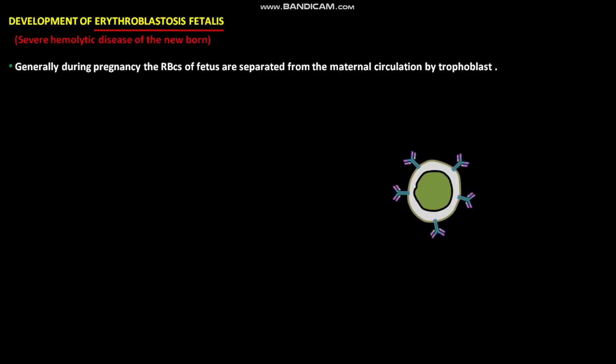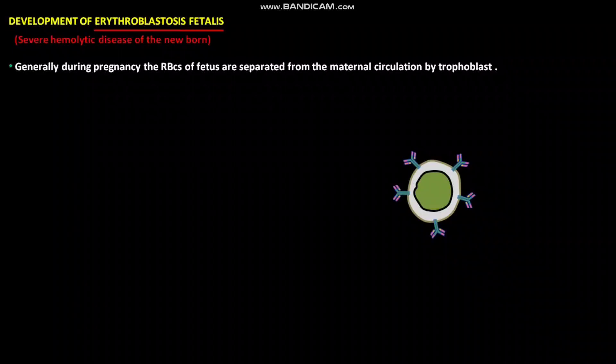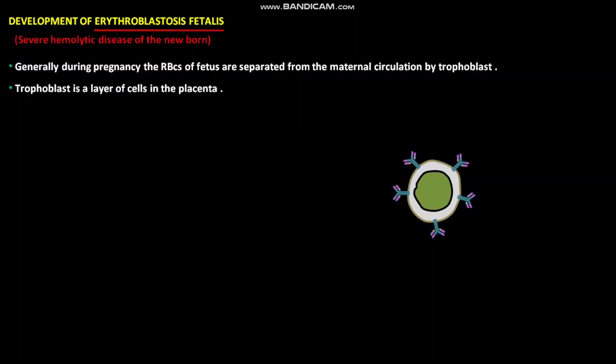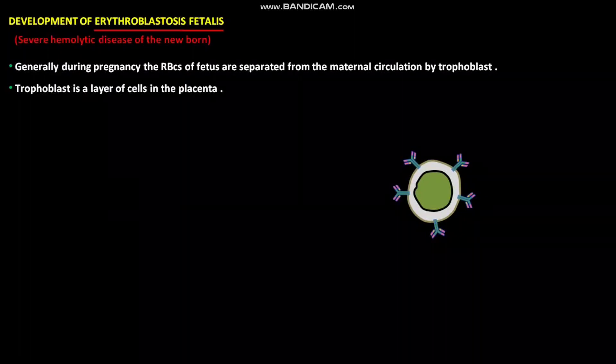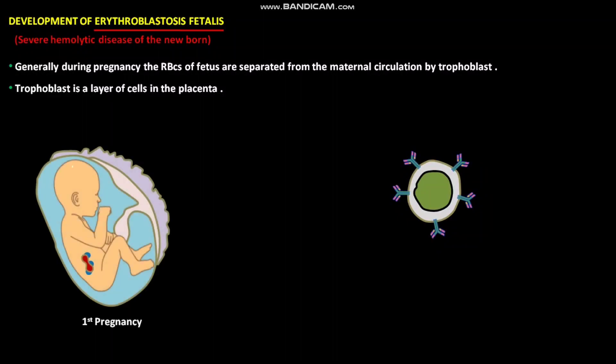Generally during pregnancy, the RBCs of the fetus are separated from the maternal circulation by the trophoblast, which is a layer of cells in the placenta. During first pregnancy, the fetus having RBCs with Rh antigen develops normally within the uterus of a mother having no Rh antigen on her RBCs, because the mother is usually not exposed to enough fetal RBCs to activate her inactive Rh-specific B cells.